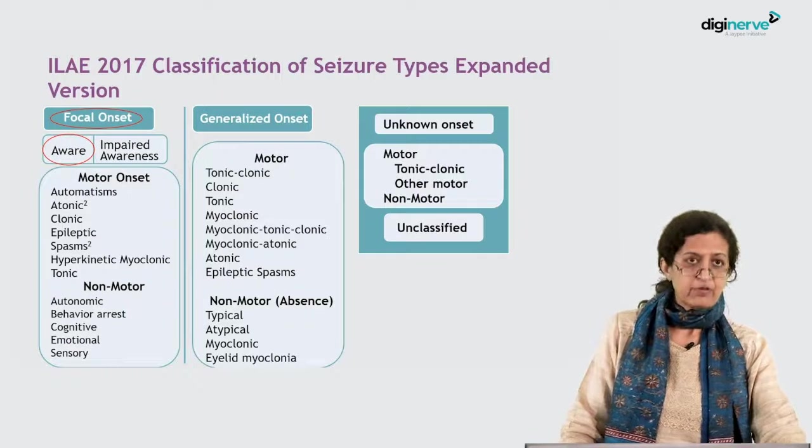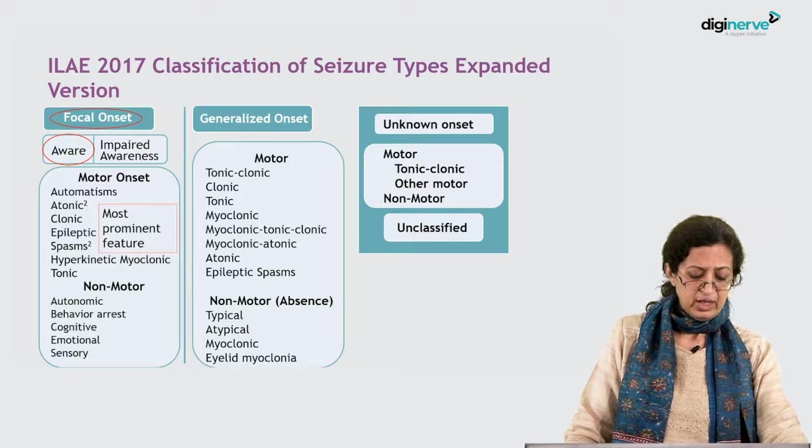Looking at the video, the episode is characterized by forceful head and eye deviation to the right along with clonic movements of bilateral eyelids and forehead muscles. The child is aware during this episode; he tries to speak but cannot verbalize clearly. The onset is focal motor with preserved awareness, so it is classified as focal aware motor clonic. Clonic was the most prominent feature.